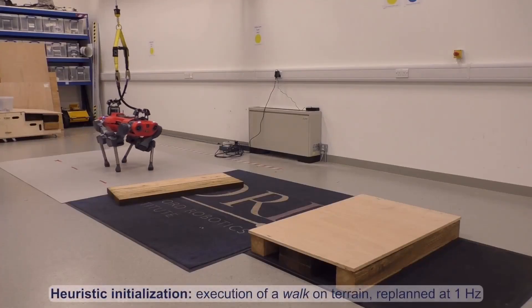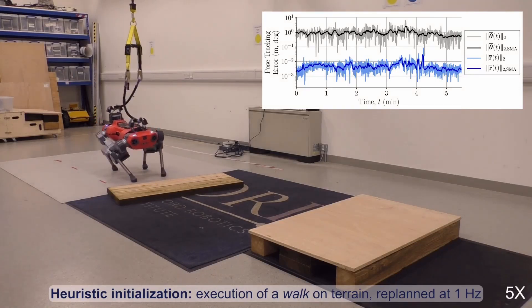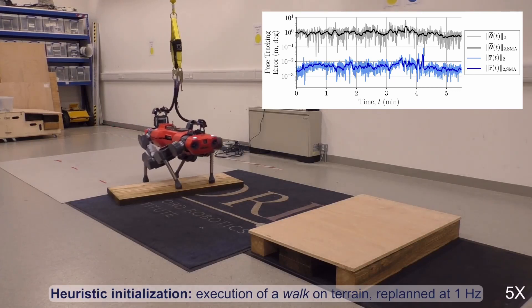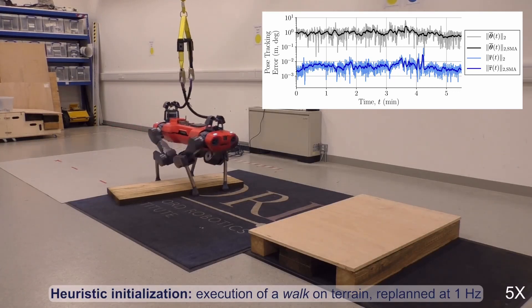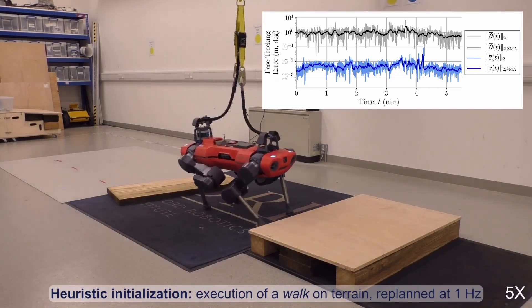We have deployed our system on the real ANYmal C quadruped. During one of the tests, we used the heuristic to walk over a series of pallets for 5.5 minutes. Throughout this time, the whole body controller was able to track the resulting trajectories as indicated by the plot showing the small and bounded base position and orientation errors.